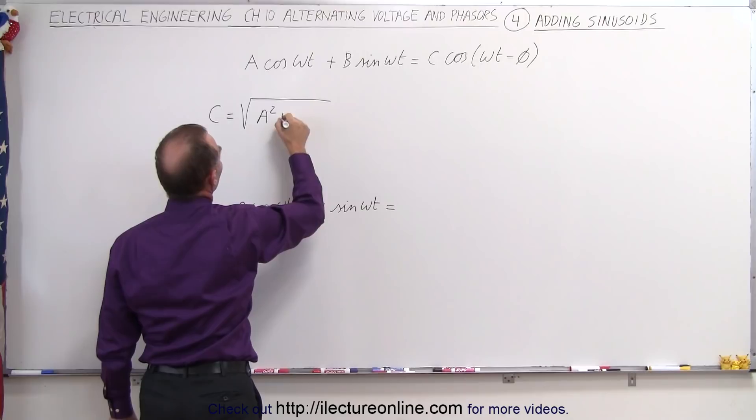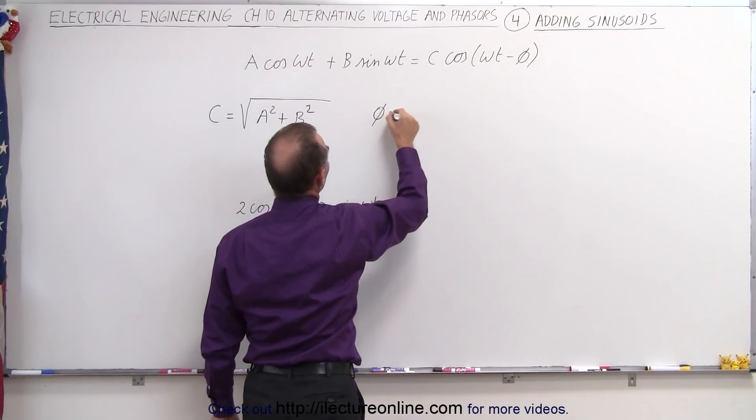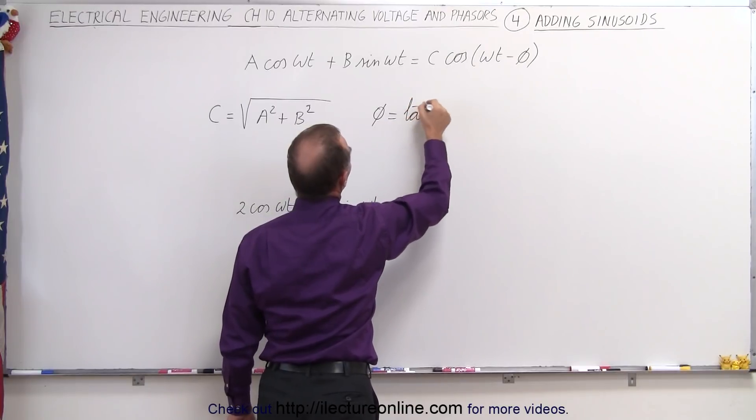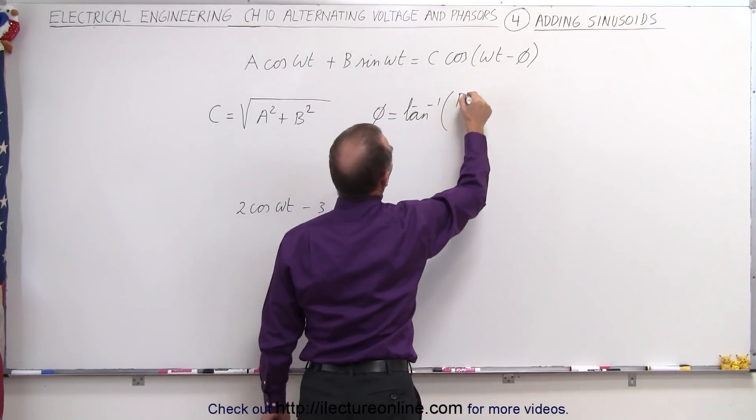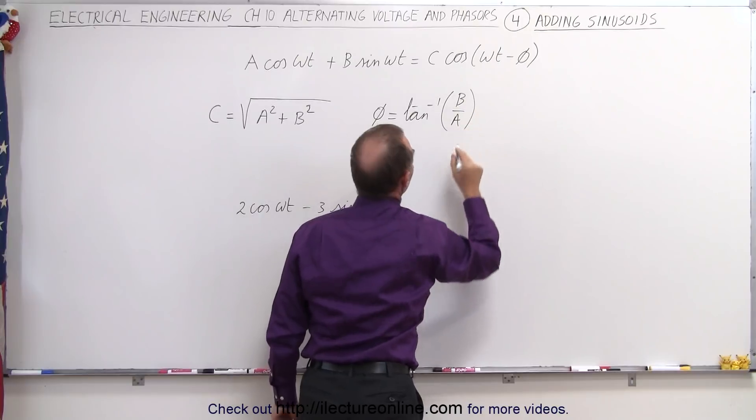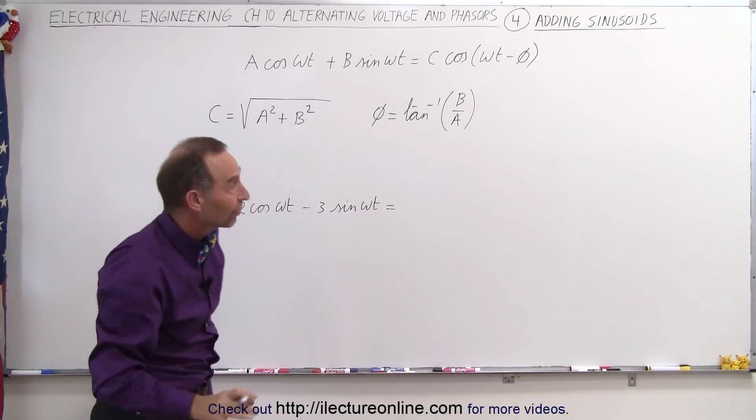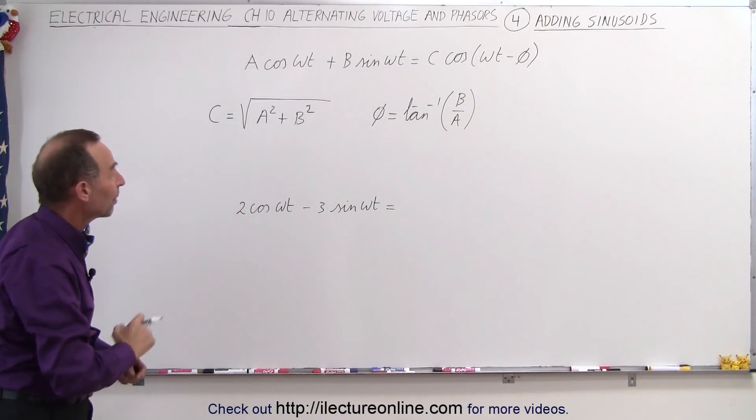And secondly, to find the phase angle, that will be equal to the arctangent of the ratio of B over A. And of course, we do have to take into account the signs of B and A if they're positive or negative.